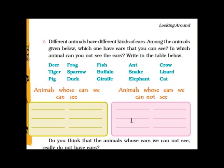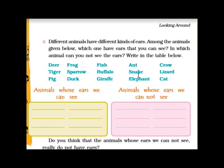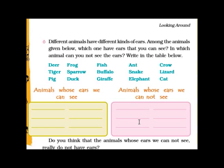Ant — we cannot see its ear; they don't have external ears. Crow — the ears cannot be seen. Tiger — yes, you can see tiger's ears. Sparrow is a bird; you cannot see external ears. Buffalo — you will write it here. Snake — the ears cannot be seen; snakes cannot hear. Lizard — you will write it in animals whose ears we cannot see.